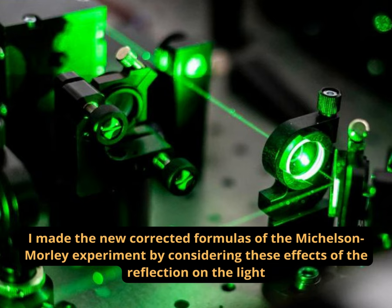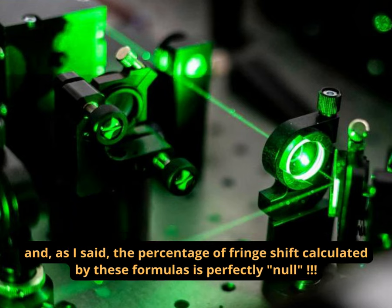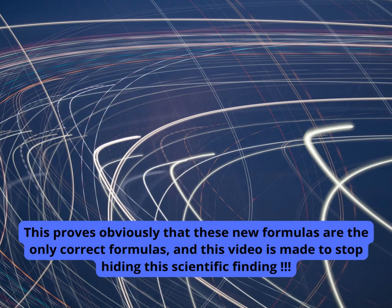I made the new corrected formulas of the Michelson-Morley experiment by considering these effects of the reflection on the light and, as I said, the percentage of fringe shift calculated by these formulas is perfectly null. This proves obviously that these new formulas are the only correct formulas, and this video is made to stop hiding this scientific finding.